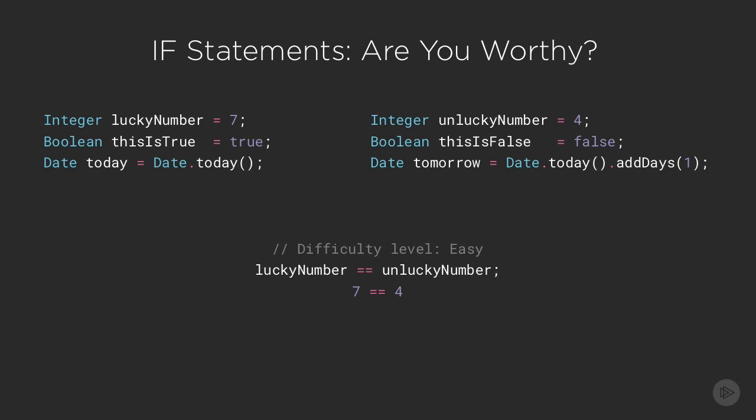Our lucky number variable is 7 and the unlucky number variable is 4. 7 does not equal 4, so this statement is false. Next up, this one's a little more complicated. Pause now and tell me if it's true. Let's evaluate this statement one step at a time. First, we'll substitute in actual numbers instead of the variable names. Then we finish up all the math. We're left with 7 does not equal 7. Clearly this isn't true. The answer is false.